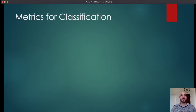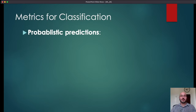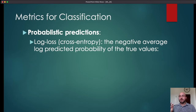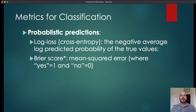Finally, let's talk about metrics for probabilistic predictions. Here there's one very dominant choice: log loss, also called cross entropy. This is the negative average log of the predicted probabilities of the true values — we'll go through an example in a moment. A second option is the Brier score, which is essentially the mean squared error between your predicted probability of yes and the actual answer (1 for yes, 0 for no).